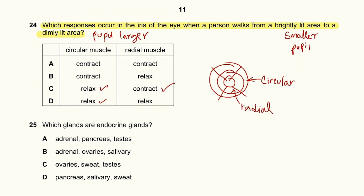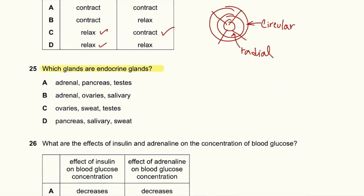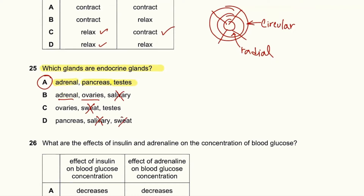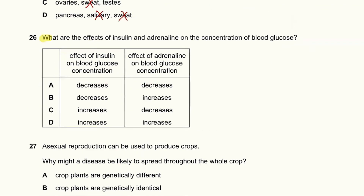Question 25: Which glands are endocrine glands? Endocrine glands release hormones directly into the blood. The adrenal gland releases adrenaline, the pancreas releases insulin and glucagon, and the testis releases testosterone — all directly into the blood — so A is correct. The salivary gland releases enzymes into the mouth, not the blood, and sweat glands are also incorrect.